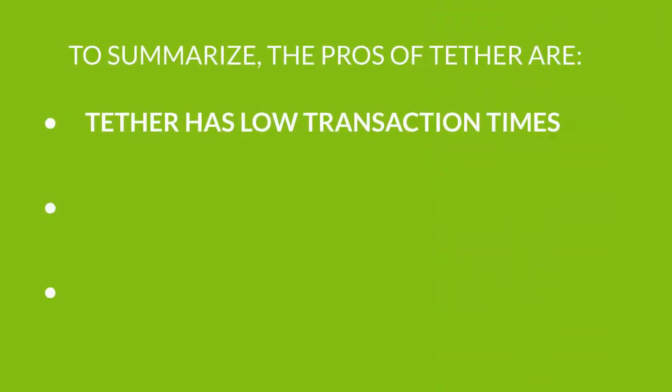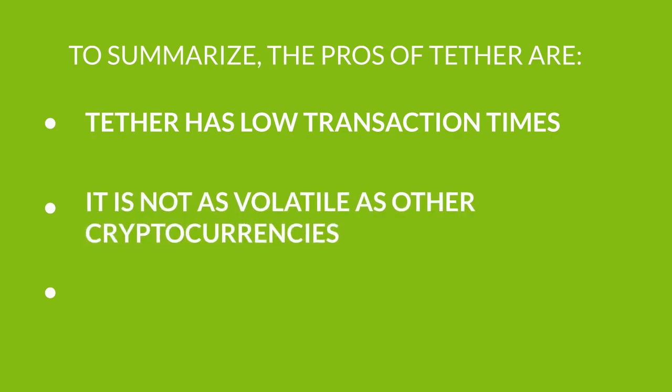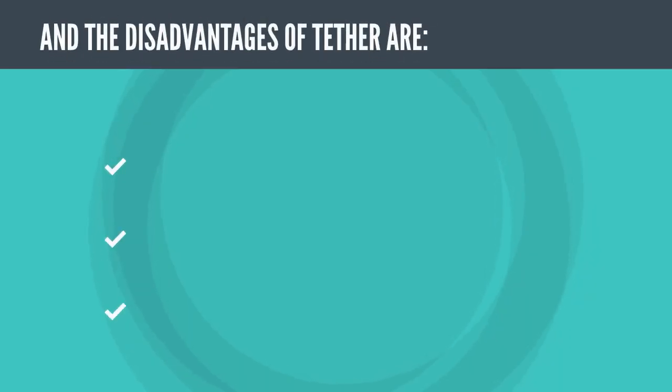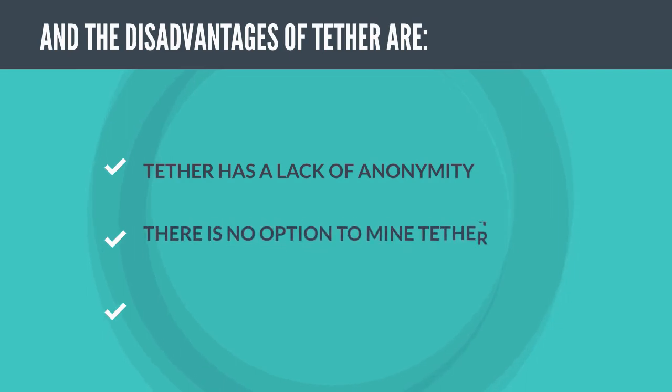To summarize, the pros of Tether are: Tether has low transaction times, it is not as volatile as other cryptocurrencies, transfer between Tether wallets involves zero fees. And the disadvantages of Tether are: Tether has a lack of anonymity, there is no option to mine Tether, there is still price instability in Tether.